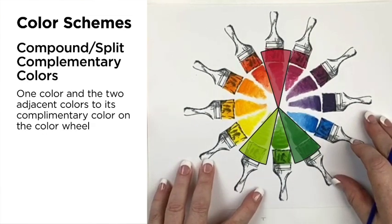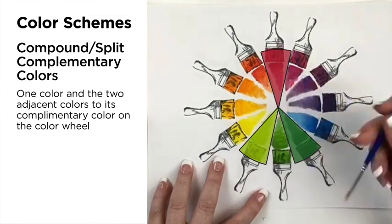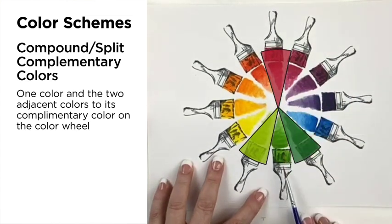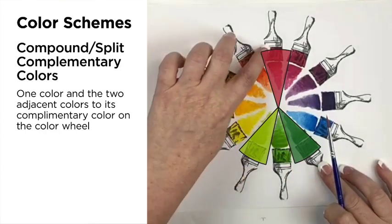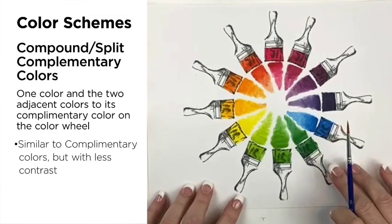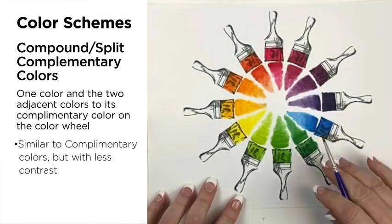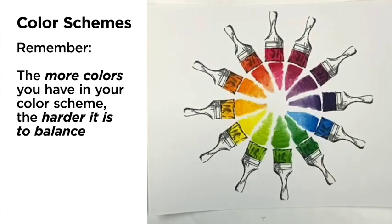A compound or split complementary color scheme is created when you choose a color like red and the two colors adjacent to its complementary color directly across — so we have two shades of green to the red. While similar to a complementary color scheme, the addition of adjacent colors helps create a more interesting palette but with less contrast. The more colors you have in your palette, the more difficult it is to balance.